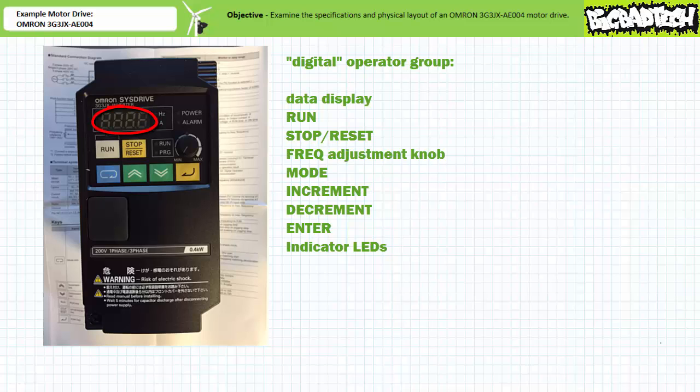The data display displays relevant data such as frequency reference, output current, or other parameter values. The run button activates the motor using the pre-programmed parameters when the digital operator mode is selected. If the motor drive has experienced an error, this button will also reset it. The frequency adjustment knob changes the output frequency of the drive when the digital operator mode is selected.